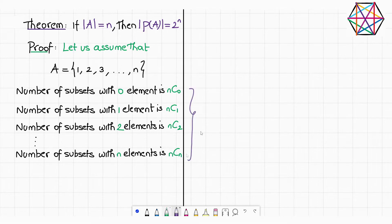Now we need to add all these terms. Then the total number of subsets is, we know that it is mathematically denoted by the notation cardinality of P(A) and it is given by n choose 0 plus n choose 1 plus n choose 2 plus it goes on up to n choose n.